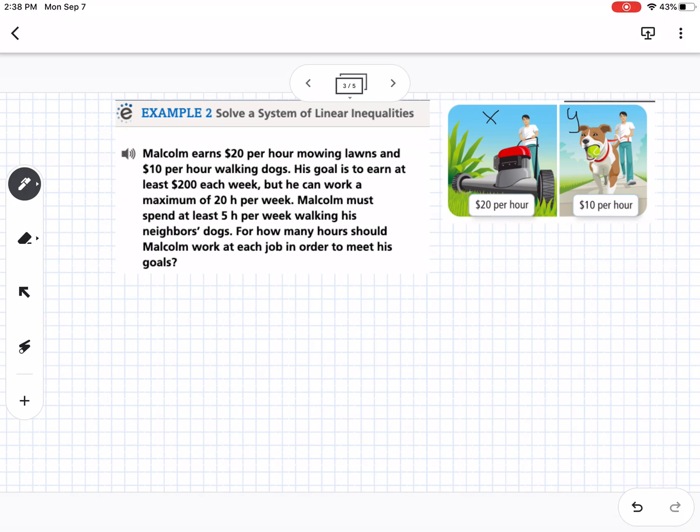I am going to say that X is mowing and Y is dog walking, so we need to define those variables. The first thing I know is that he makes $20 for mowing lawns, so 20X, plus he makes $10 walking dogs, so 10Y, and he wants that to make him at least $200 each week, so we want that amount to be greater than or equal to 200. The next thing I know is he can work at a maximum of 20 hours, so the hours spent mowing plus the hours spent walking dogs has to be less than or equal to 20. Finally, I know that he has to walk his neighbor's dog at least 5 hours, so Y has to be greater than or equal to 5.